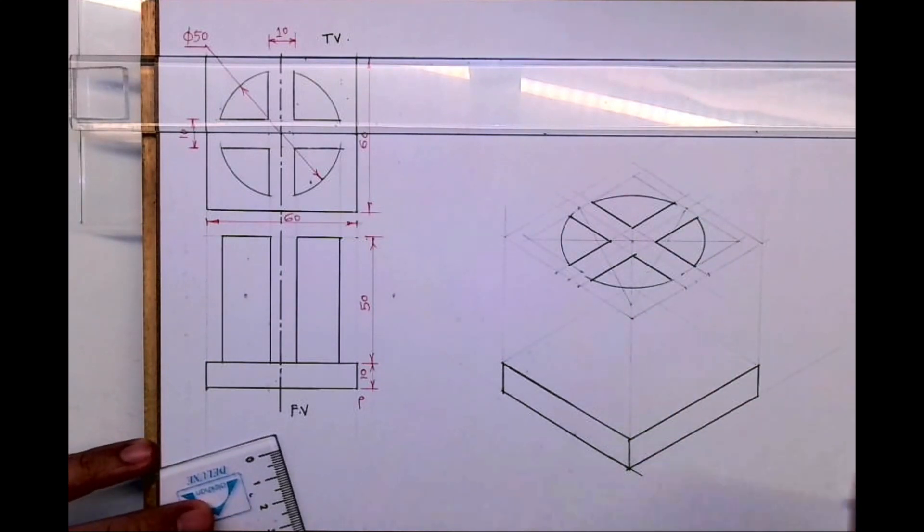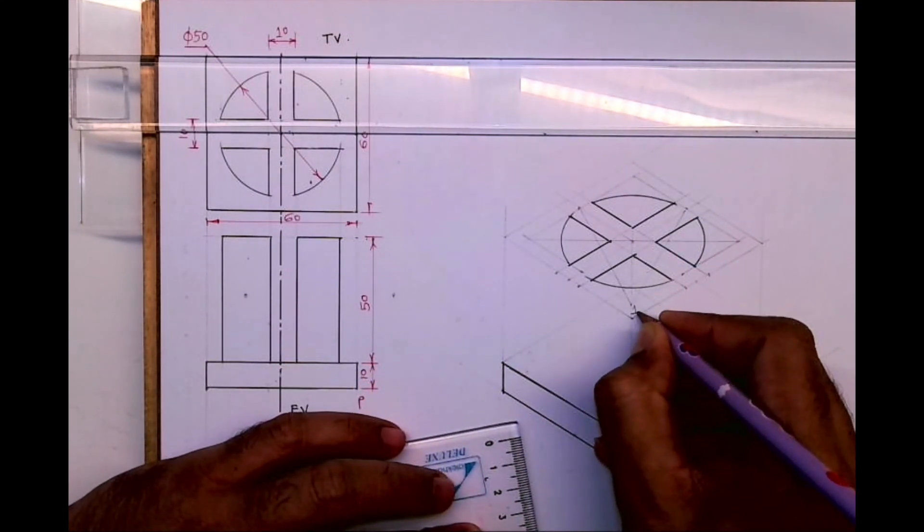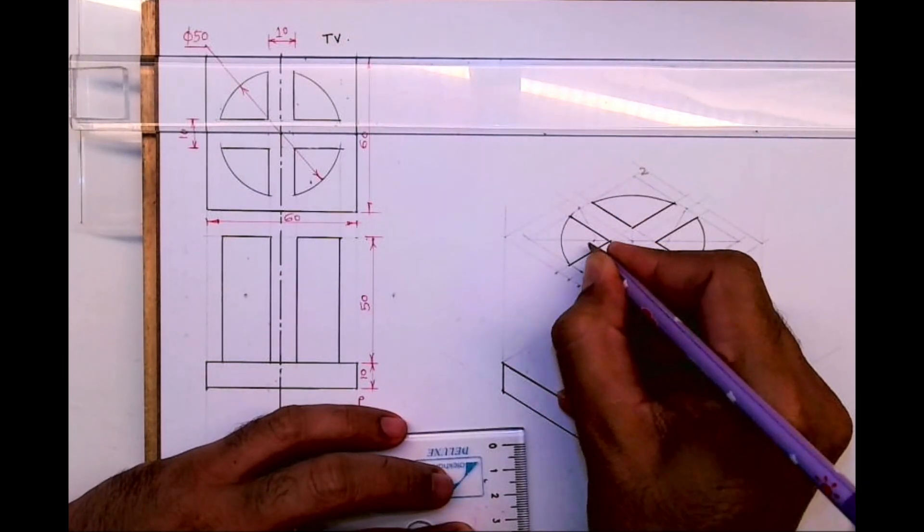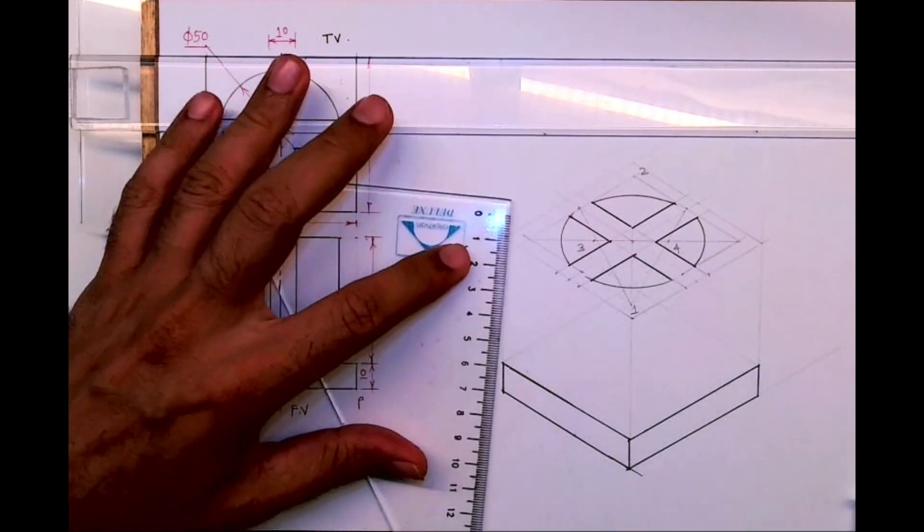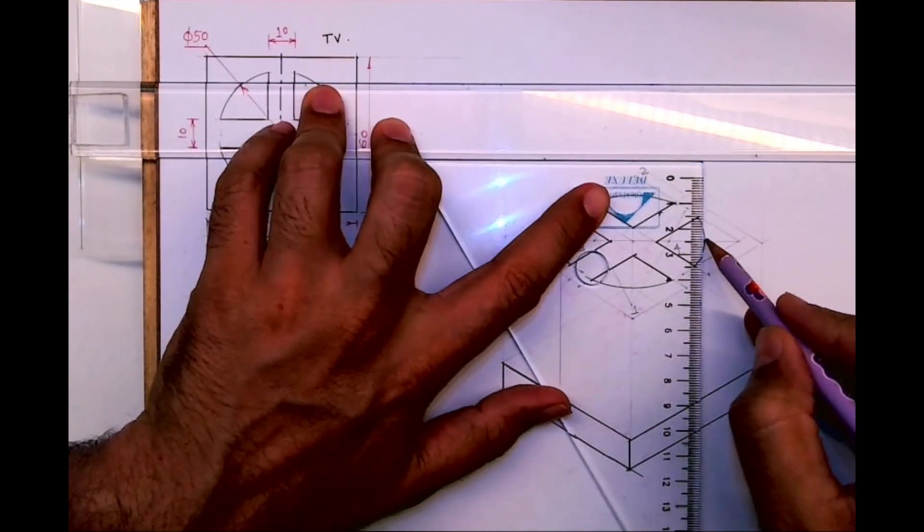So we need to transfer all the points down by 50 mm. I will write them as 0.1 - from here we did the first arc - 0.2, 0.3, and 0.4. So we need to transfer all these points down by 50 mm and we need to draw tangent.